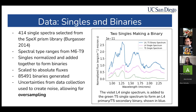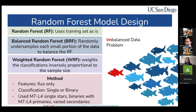Because of this, we have to scale it down to the absolute flux so that the information is not misleading the random forest. Using this method, 85,000 artificial binaries were generated. We used the uncertainty from data collection — so uncertainty from the telescope — to create noise which allows for oversampling. Because we have only 414 singles but 85,000 binaries, this becomes an imbalanced data problem. If a random forest decides to categorize all of these as binaries, it's going to still give a very high precision. Some ways to avoid this problem include oversampling and using different random forest models: a traditional random forest just uses the training set as is; a balanced random forest will randomly undersample each small portion of the data; while a weighted random forest weights classifications inversely proportional to sample size.